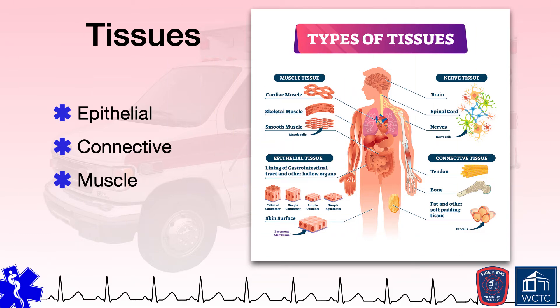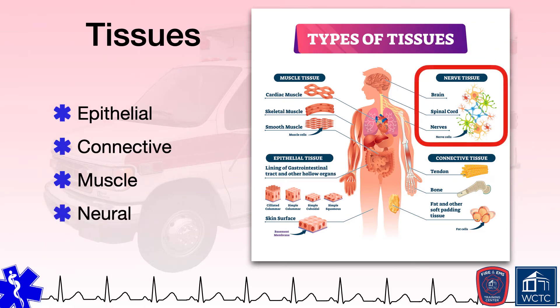Lastly, neural or nervous tissue conducts electrical impulses for the purpose of coordinating and controlling body activities such as stimulating muscle contraction, providing feedback from the environment, governing emotions, supporting reasoning, and retention of memories. These tissues are found within the brain, spinal cord, and peripheral nerves.